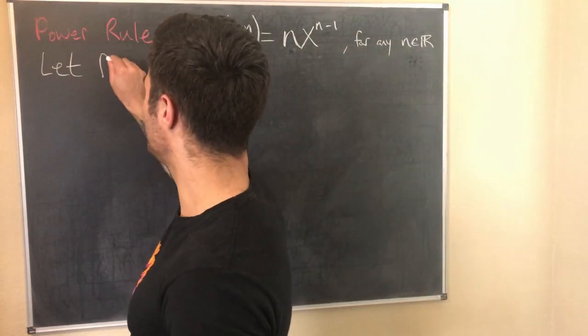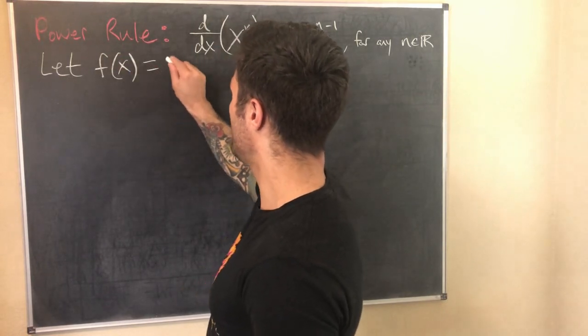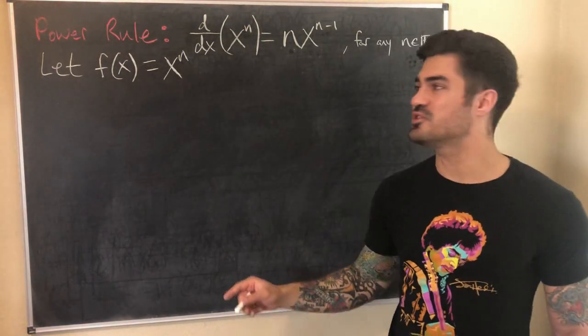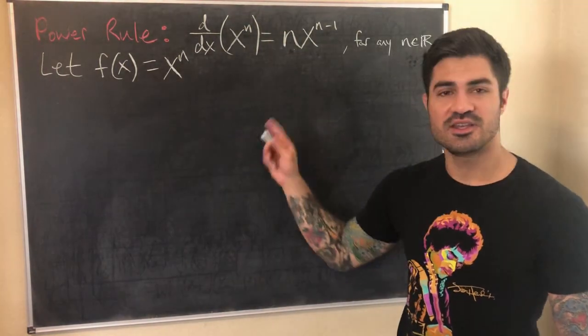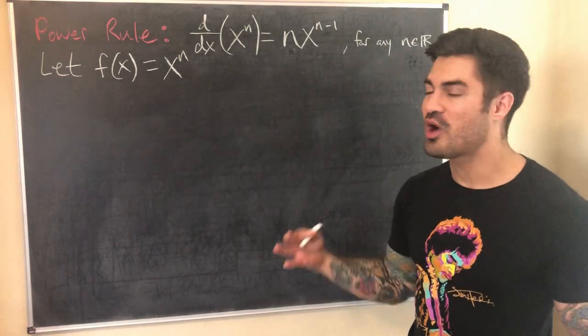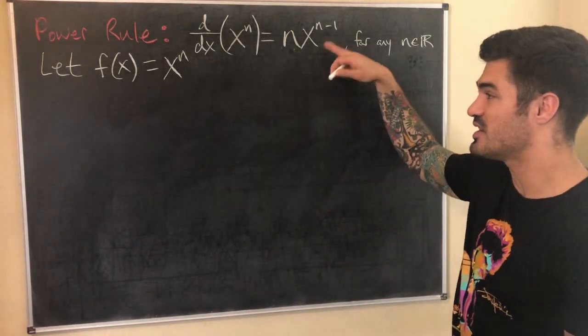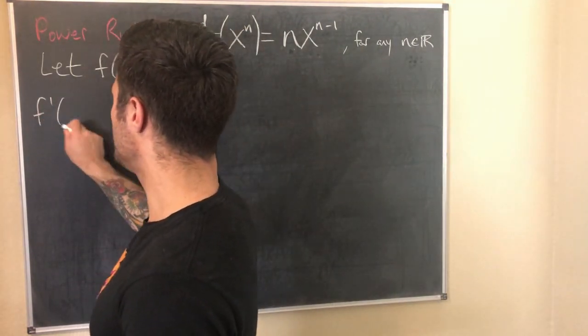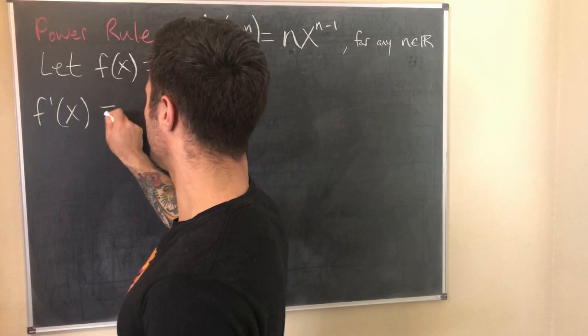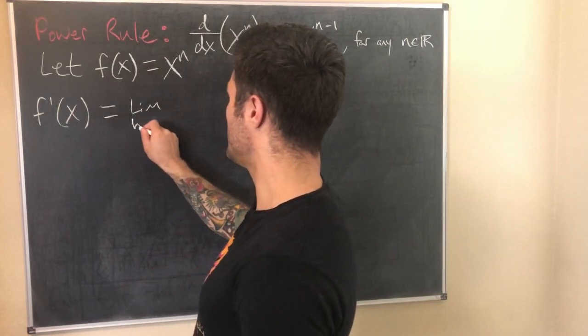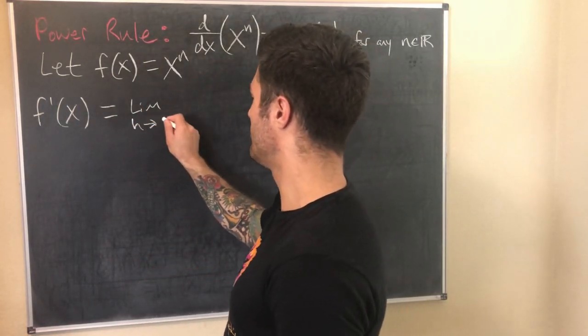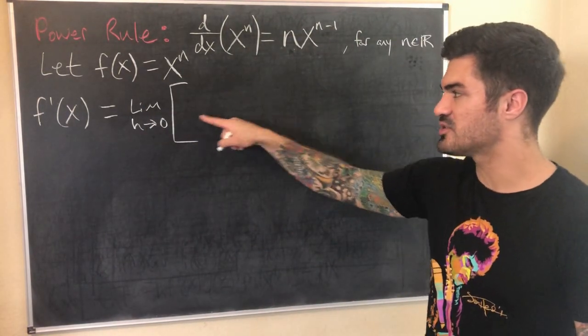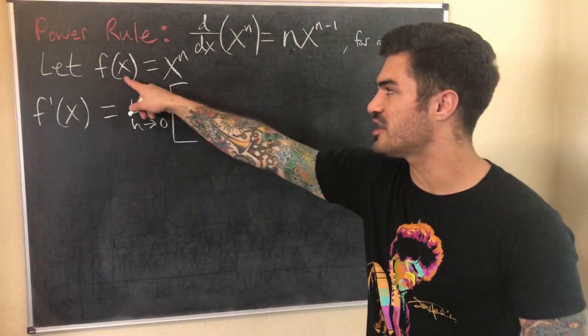And what we're going to do, or how I'm going to start, at least, is I'm going to define a function as x to the n. So if I define this function as f(x) = x^n, now all I need to show is that f'(x), the first derivative, is n times x to the n minus 1. So how I do that is I use the definition of the derivative. The definition I'm going to use is this limit as h approaches 0 of f(x+h) minus f(x) all over h.